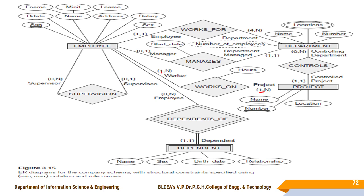The project side for WORKS_ON also has (1,N): minimum 1 and maximum N workers per project. 1 indicates total participation. For the CONTROLS relationship, the department side is (0,N): 0 means a department may or may not control a project — partial participation — and N means a department can control multiple projects. The project side is (1,1): minimum 1 and maximum 1, meaning each project must be controlled by exactly one department — total participation.